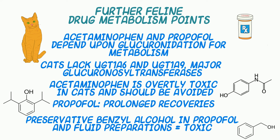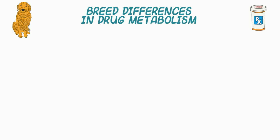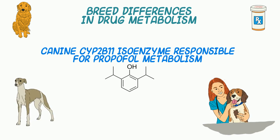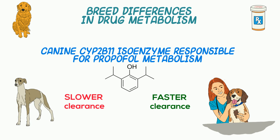Drug metabolism differences can occur between breeds as well. For example, the canine CYP2B11 may be the isoenzyme responsible for propofol metabolism in dogs. Greyhounds and other sighthound breeds clear propofol more slowly than mixed breed dogs or beagles.